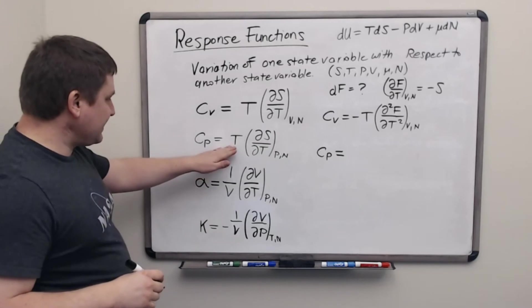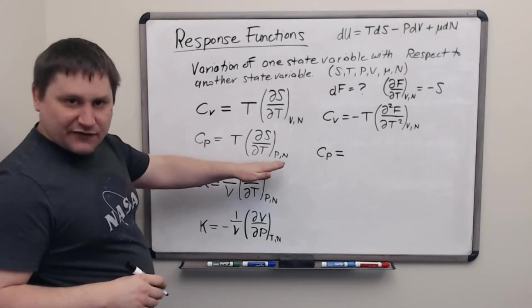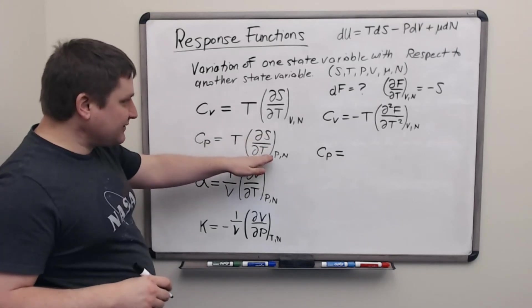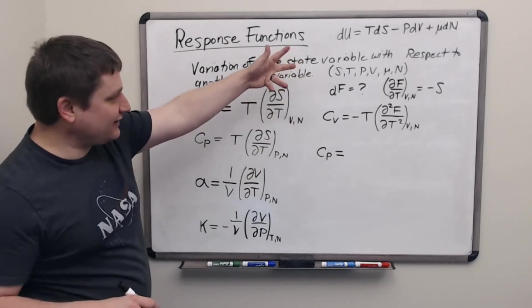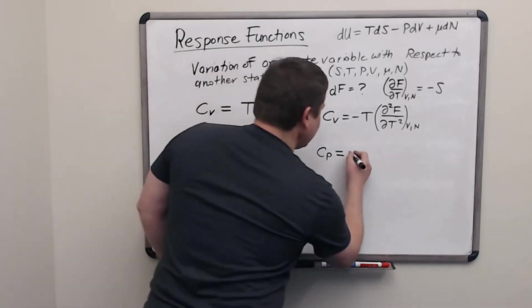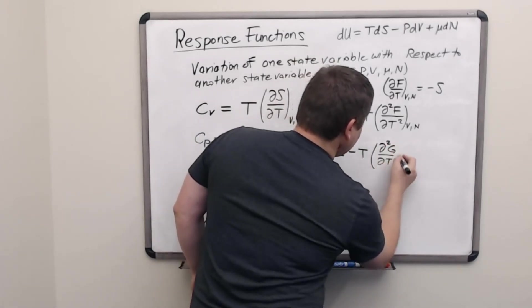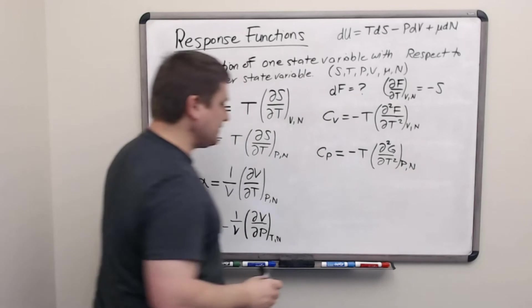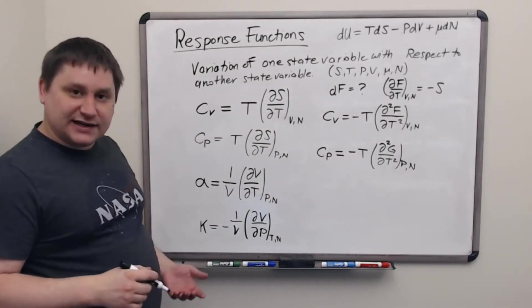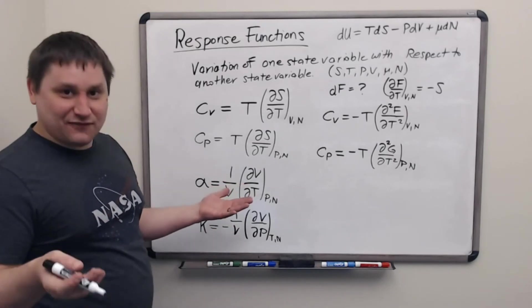For the heat capacity at constant pressure, I'm going to be looking at the Gibbs free energy. The derivative of Gibbs G with respect to T temperature is also negative S because it's also got that flip from S to T. So this is going to be negative T d²G/dT² at constant pressure and particle number. Okay, so for the heat capacity at constant pressure, it's the curvature or concavity of the Gibbs free energy function.